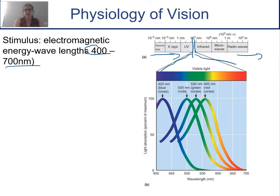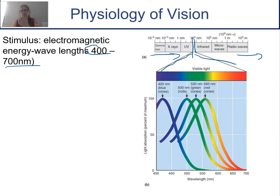We have what we call ROYGBIV, so we can see red, orange, yellow, and green. These are the colors we get because we have three colored cones — the blue cones, the green cones, and the red cones — and they overlap.